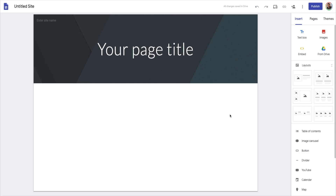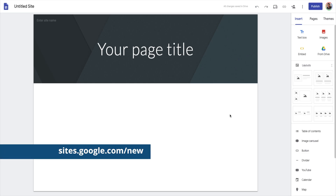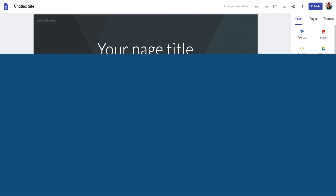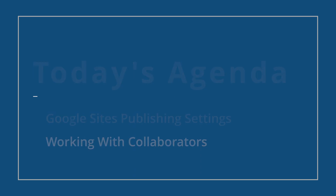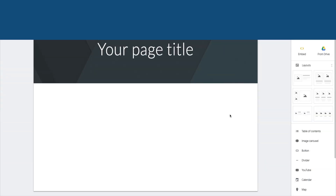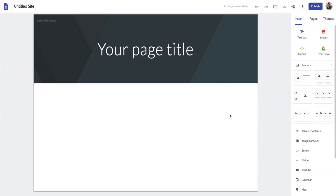Here we are in the new Google Sites and today we're going to be talking about two things that are so important to the launching of our website. The first thing we're going to be discussing is the publishing settings and how to choose your own domain to get it seen by your audience. The second thing is how to collaborate with others and some of the important issues that people have in creating their websites.